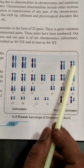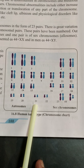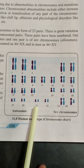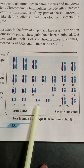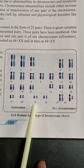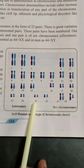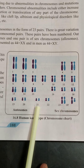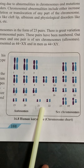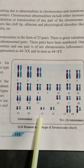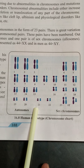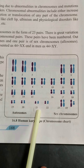If an extra chromosome is added to any pair of the autosomes — as in our example of the 21st pair — the genetic disorder that occurs is called Down syndrome, and a mentally retarded child is produced. The other name for Down syndrome is trisomy of the 21st pair.